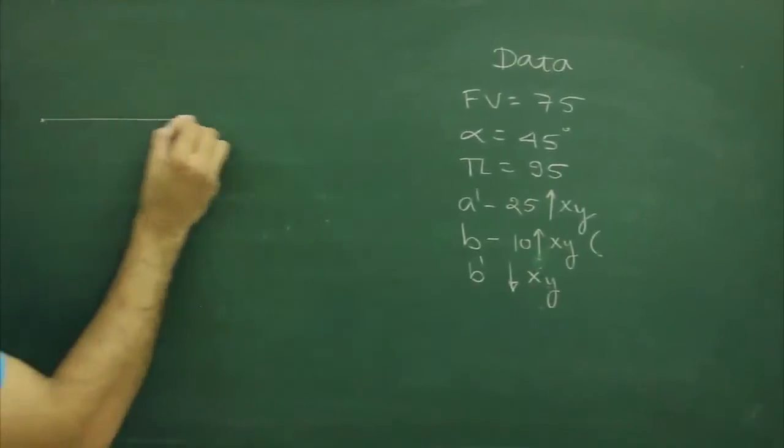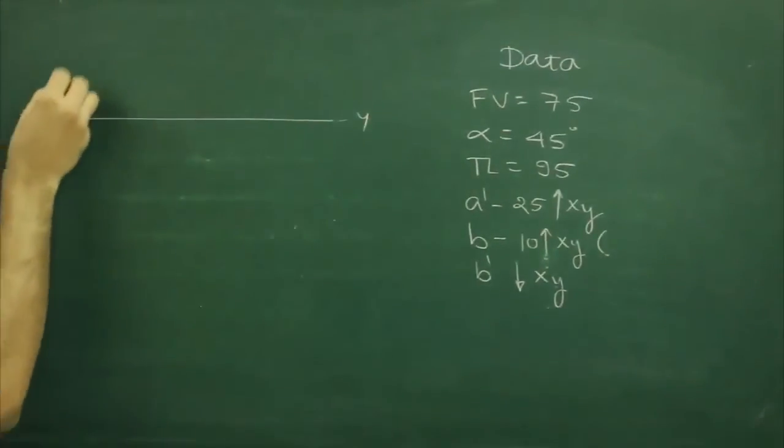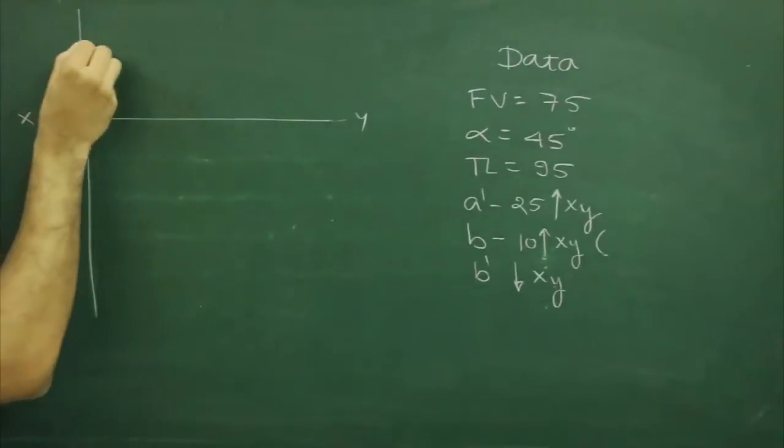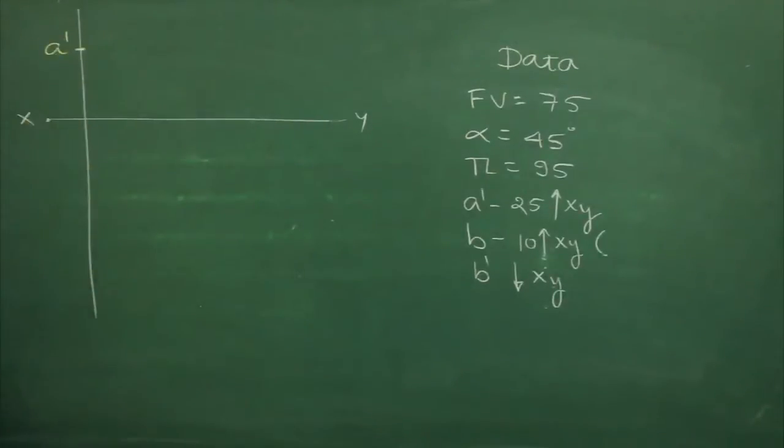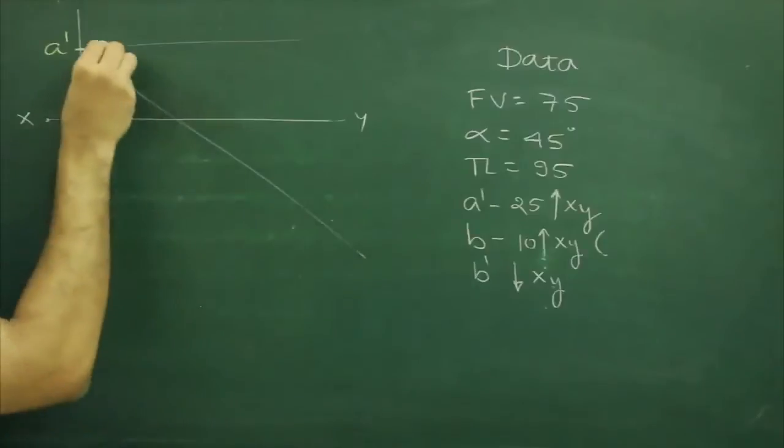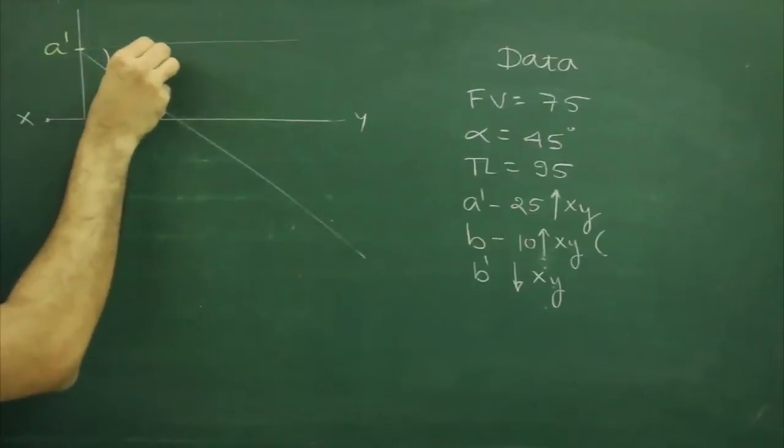So first we will draw XY. We will mark point A' which is 25M above XY, then we can draw alpha. So we will draw downward because B' is below XY.